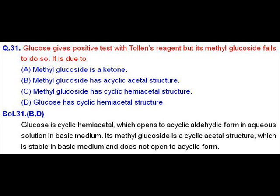Because glucose has a cyclic hemiacetal structure which opens in aqueous solution and has an aldehyde group and gives positive test with Tollen's reagent. But when we take methyl glucoside then it is a cyclic acetal structure which is stable in aqueous solution. It does not open so it fails to give Tollen's test.